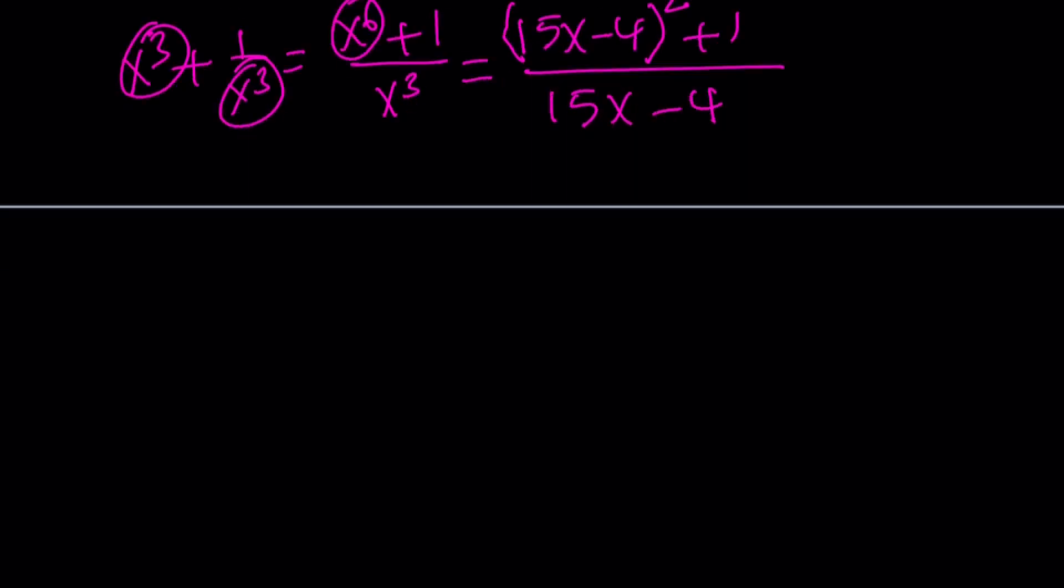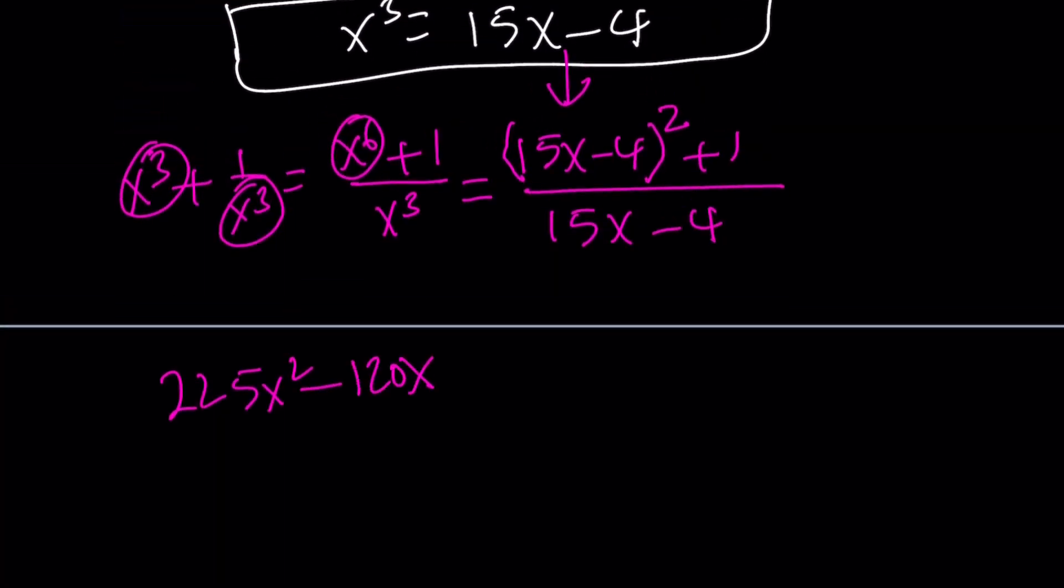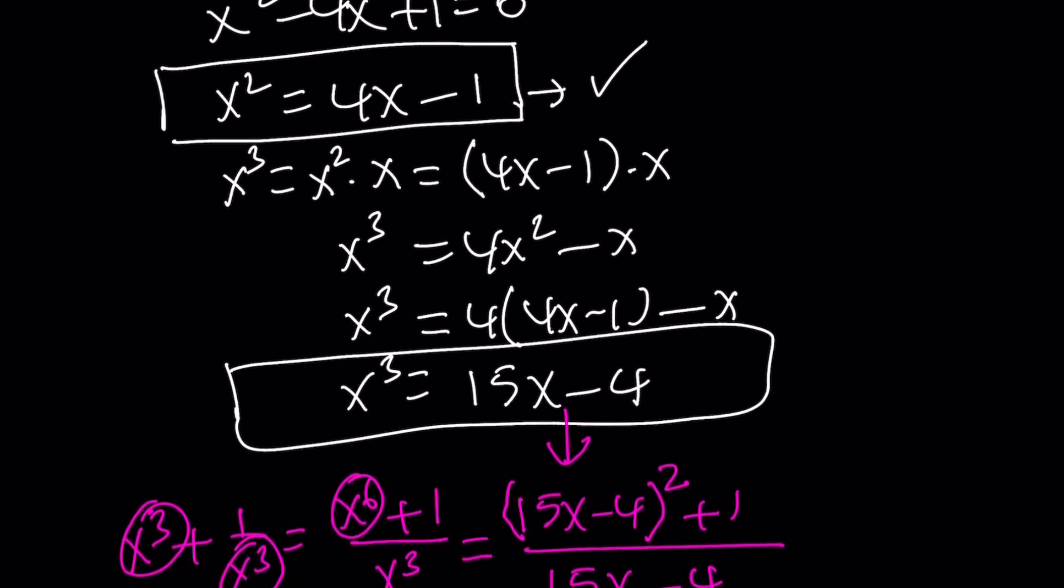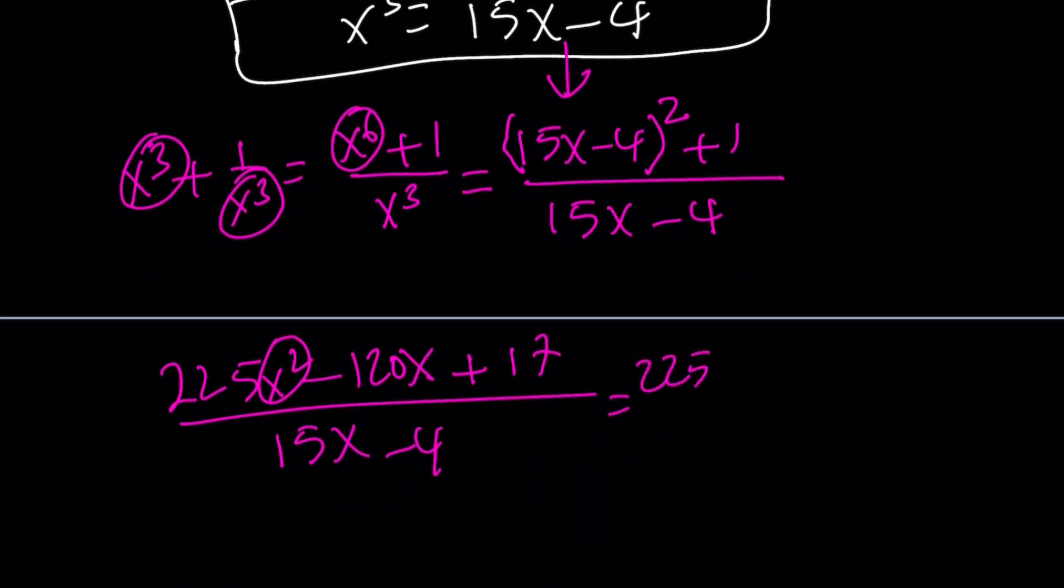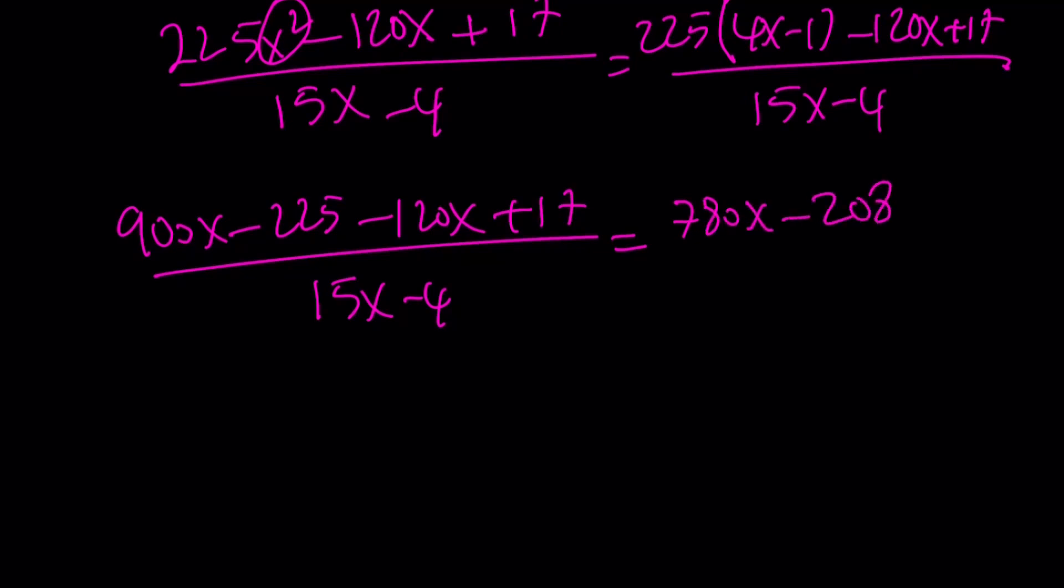So we're going to go ahead and square this. This is going to give me 225x squared minus 120x plus 16 plus 1, plus 17. That is divided by 15x minus 4. Now, x squared, again, can be replaced with 4x minus 1. So that's 225 times 4x minus 1 minus 120x plus 17 divided by 15x minus 4. Now, if you go ahead and distribute, you're going to get 900x minus 225 minus 120x plus 17 divided by 15x minus 4.